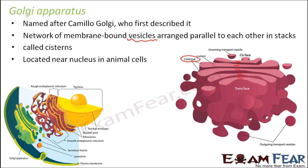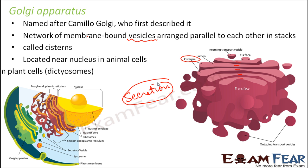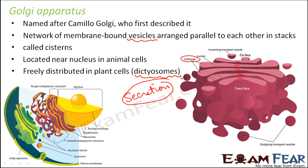Golgi apparatus are mostly seen in cells that are actively involved in secretion of chemical products, so secretion is the key word for Golgi apparatus — their main function is secretion. In plants, these Golgi bodies are present as well, but their arrangement is a little different, and they are often termed dictyosomes in plants.